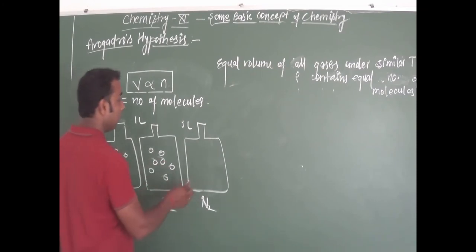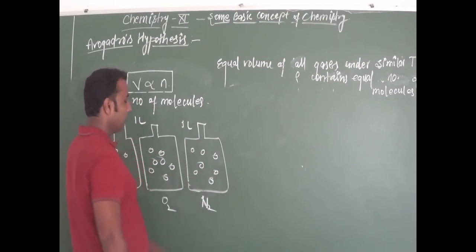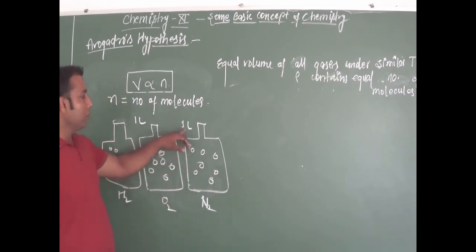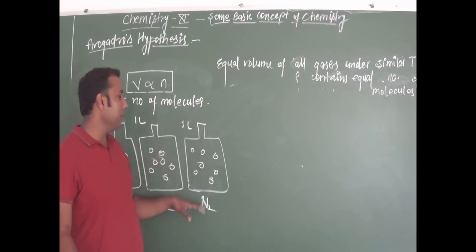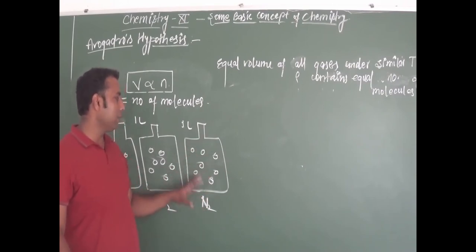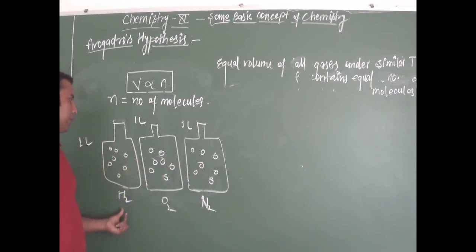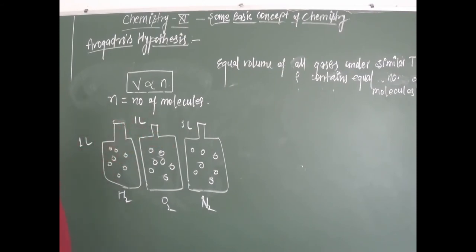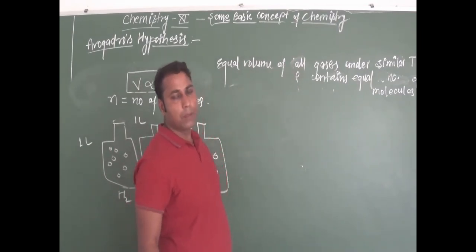If we see here nitrogen, and the volume is 1 liter, the number of molecules will also be similar. Same molecules of nitrogen, same molecules of oxygen, same molecules of hydrogen — in similar volume under similar temperature and pressure — will be constant.